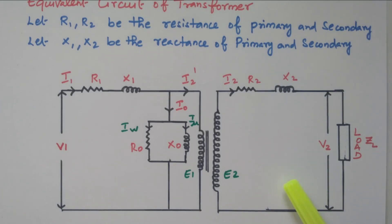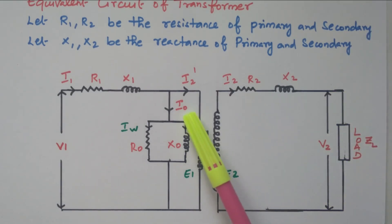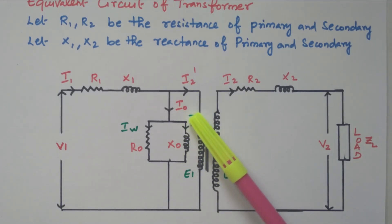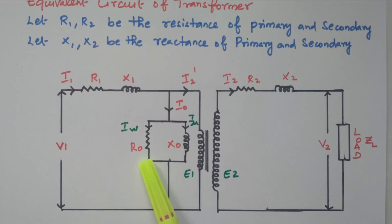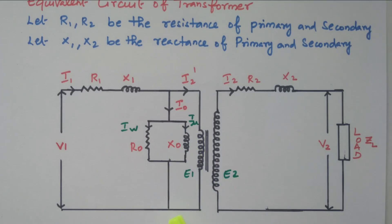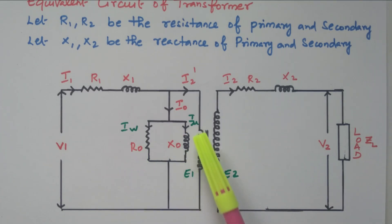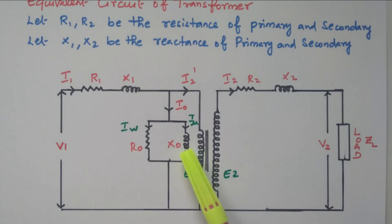We have the no-load condition and loaded condition. When the transformer is not loaded — meaning the secondary is not connected with any load — a small amount of current I0 will flow through the primary winding. This I0 is the no-load current. I0 has two components: the working component and the magnetizing component. The working component is equivalent to resistance, representing the iron loss. The magnetizing component is responsible for producing the magnetic flux, acting like a reactance X0. IW is the current flowing through R0, called the active or iron loss component. I-mu is the magnetizing current flowing through X0. R0 and X0 refer to the no-load condition, responsible for magnetizing the primary winding when the secondary is not loaded.